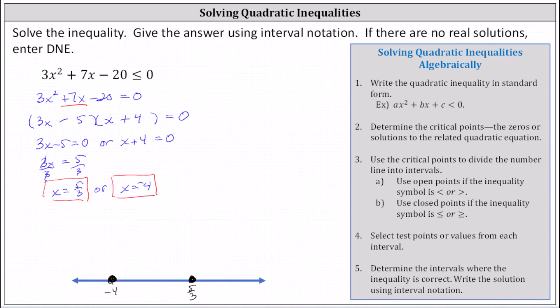Step four: we select test values in each of the intervals we created. On the left we'll use x = −5, in the middle we'll use x = 0, and on the right we need a value more than 5/3, so let's use x = 2. We substitute these test values into the inequality in factored form. If the inequality is true at the test value, the entire interval is part of the solution; if false, it is not.